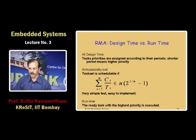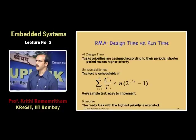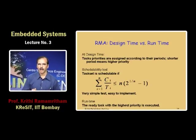If all periods are harmonics of each other — meaning there is some base period and all others are multiples of it — then the right-hand side bound becomes 1. This means the CPU can be kept 100 percent busy and yet meet all periods. The earlier formula, which applies to arbitrary periods, requires utilization below 0.69, meaning the processor cannot be loaded more than 69 percent. With harmonic periods, all processing power can be used.